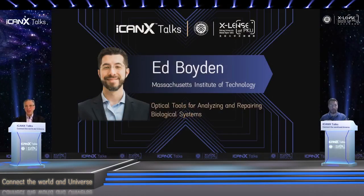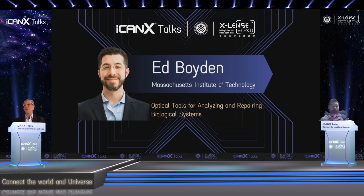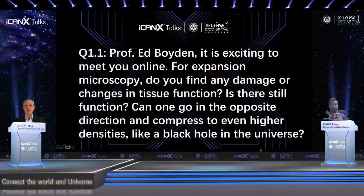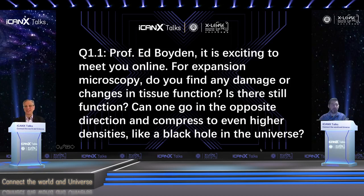Thank you so much, Ed. We have quite a few questions from the audience. The first question: for expansion microscopy, do you find damage or changes in tissue function? Can one go in the opposite direction and compress to even higher densities? The expansion process only works on preserved, non-living things — there is no function. We are expanding the molecules away from each other, so the molecules are also separated. It's really to map the molecules in cells and tissues — we're not mapping any dynamics or function. On the other hand, we are preserving the relative organization of the molecules, and that's very informative.